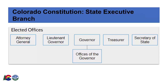The Colorado Constitution outlines that the state executive branch includes five elected offices: the Attorney General, Lieutenant Governor, Governor, Treasurer, and Secretary of State. The Governor leads the administration of most executive branch functions through the oversight of 17 appointee-led agencies, including the Department of Public Health and Environment.